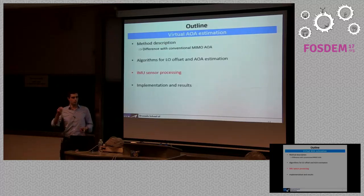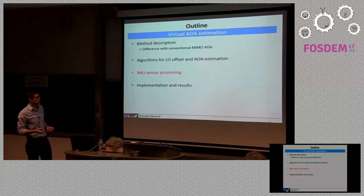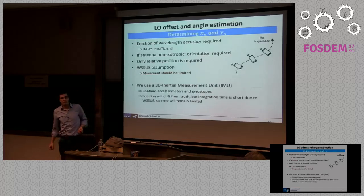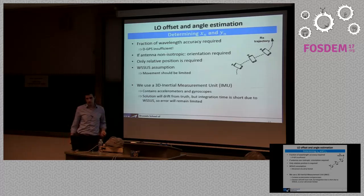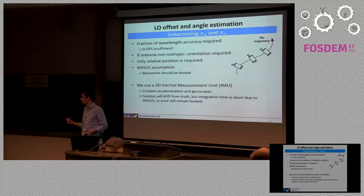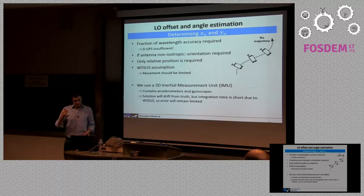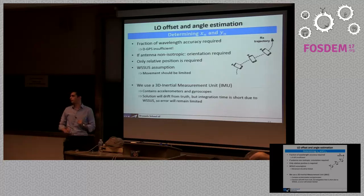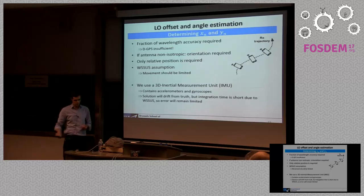The next big problem is knowing the position of the receiver every time a packet is received. For this, we use IMU — inertial measurement units. These are in every cell phone and MEMS IMUs cost just a few dollars now. IMUs contain accelerometers and gyroscopes along all three axes. You can use these for dead reckoning navigation. Anyone from the control community knows this doesn't work very well in general, but in our case we only need it for a short time — a few meters, a few seconds — so the IMU solution doesn't have much time to drift off.